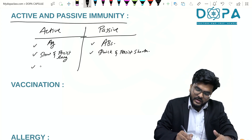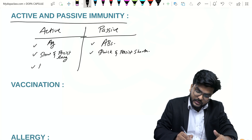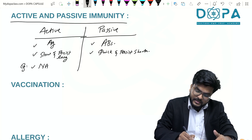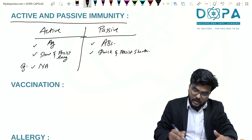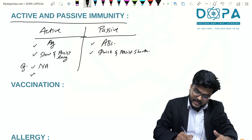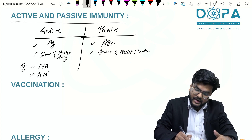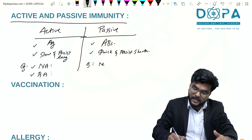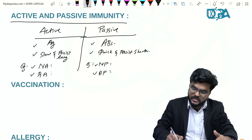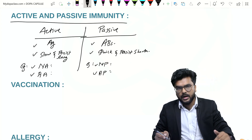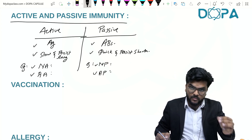You will get a clearer picture when we describe the examples. We can discuss examples in two ways: natural active immunity and artificial active immunity. Similarly, there is natural passive immunity and artificial passive immunity.